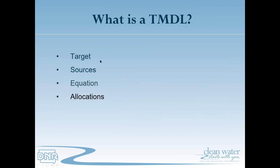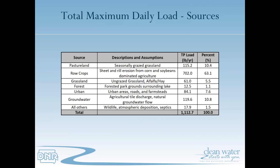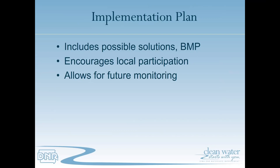Looking at the allocations of where total phosphorus is coming from in the Arrowhead Pond watershed: the main source is row crops — sheet and rill erosion from corn and soybeans — which accounts for 63% of total phosphorus contributions. So when we look at different implementation plans, we'll want to highlight and address practices that can reduce erosion in row crop situations. We've talked about the TMDL and watershed; now we'll look at steps on the ground to actually improve water quality.